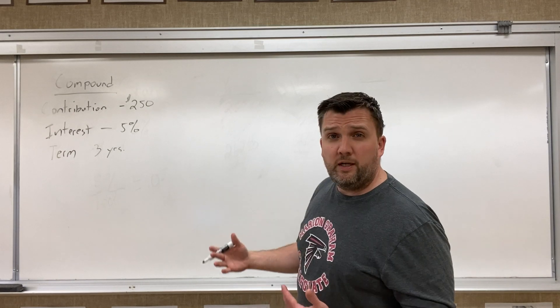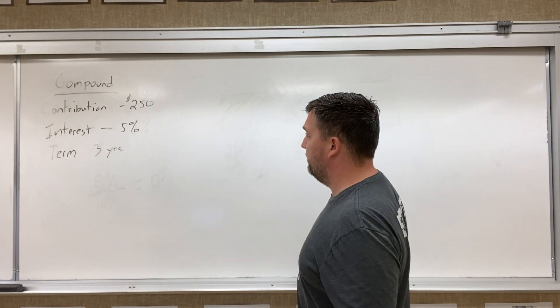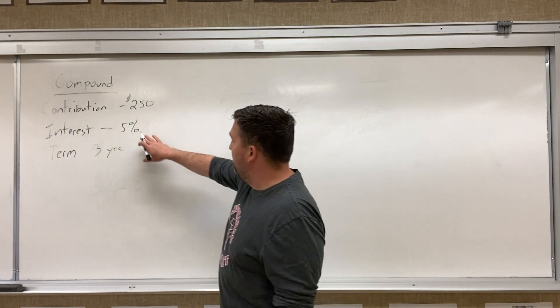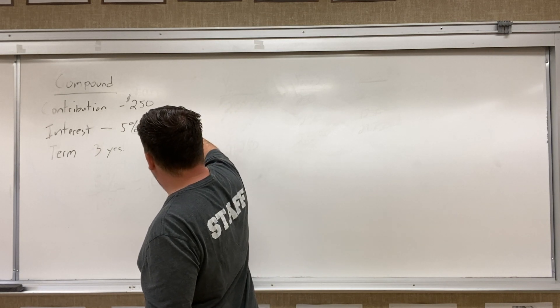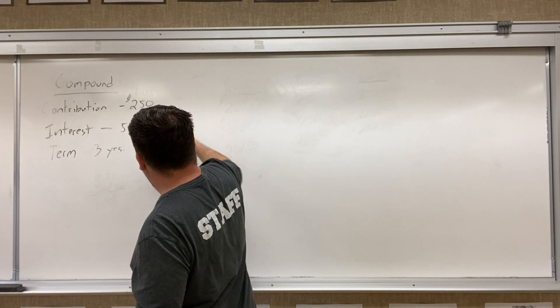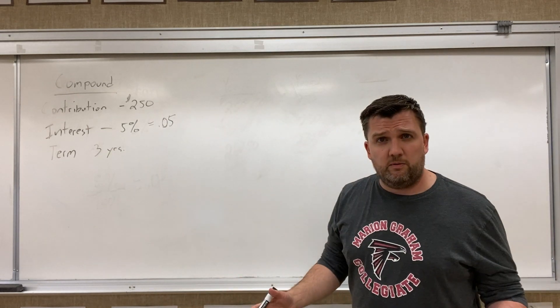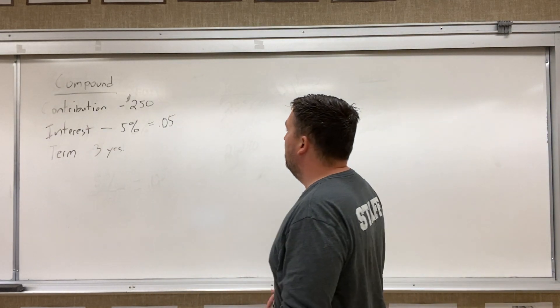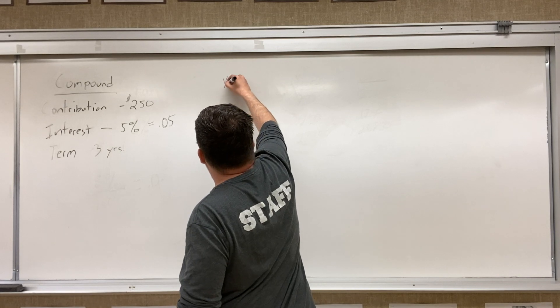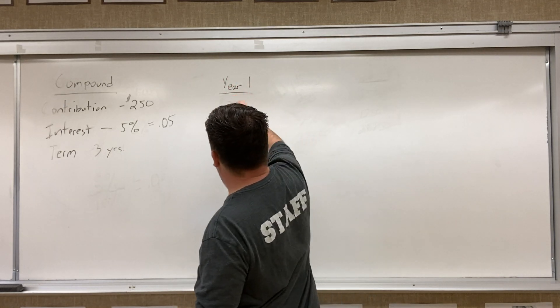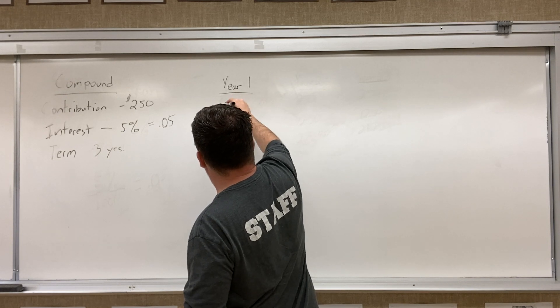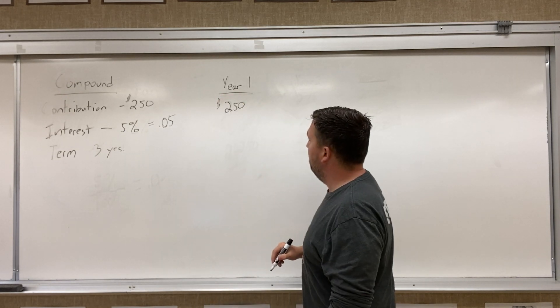And what that will look like when we do compound interest. Remember again that we do need to figure out that this is actually 0.05 when we go to use it, when we calculate our numbers. Okay, so now in the first year, it's going to start out similar to when we did the simple interest. We're going to have $250 in there in the first year.